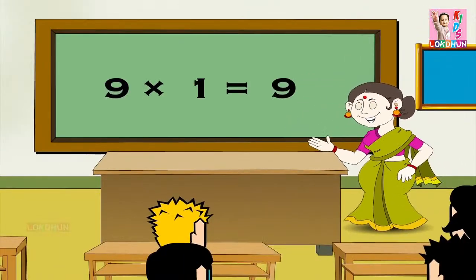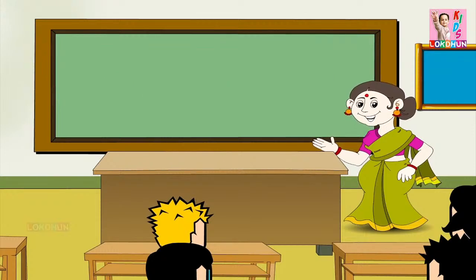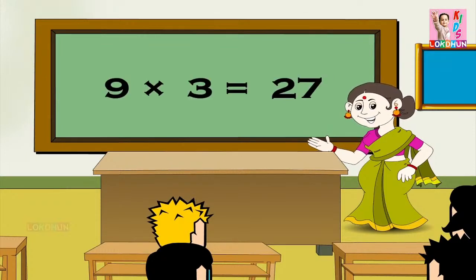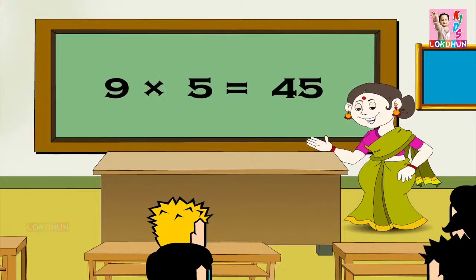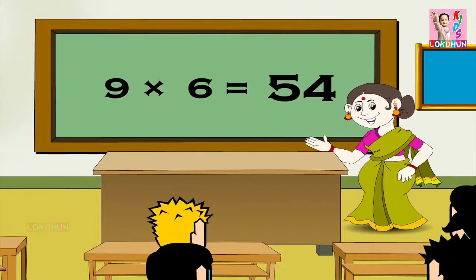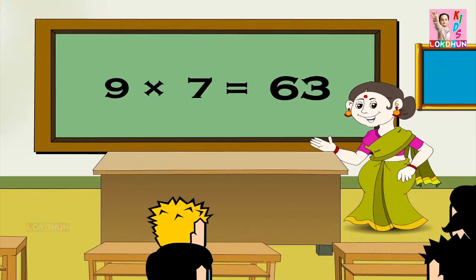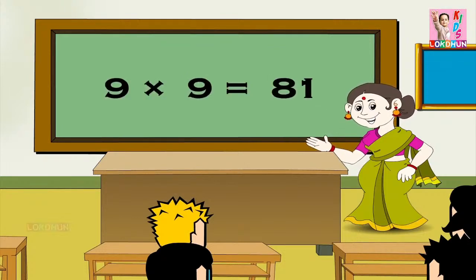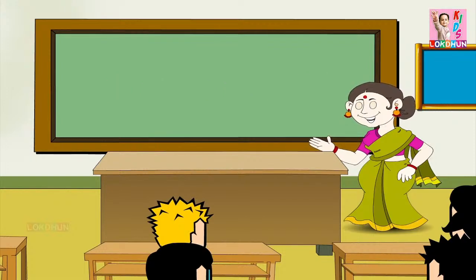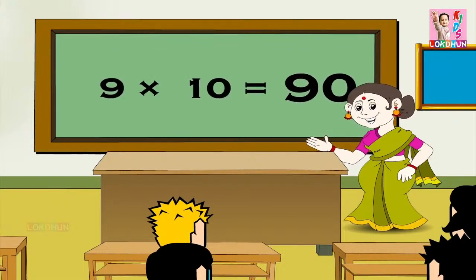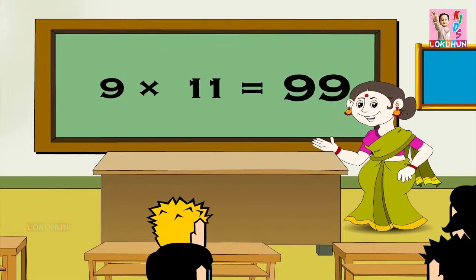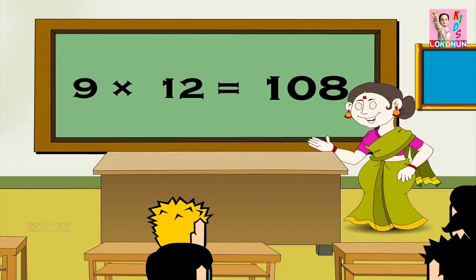9 1s are 9, 9 2s are 18, 9 3s are 27, 9 4s are 36, 9 5s are 45, 9 6s are 54, 9 7s are 63, 9 8s are 72, 9 9s are 81, 9 10s are 90, 9 11s are 99, and 9 12s are 108.